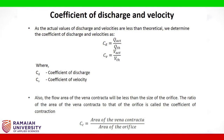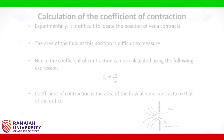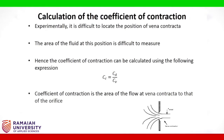The coefficient of contraction CC is equal to the area of the vena contracta divided by the area of the orifice. Experimentally, it is difficult to locate the position of vena contracta, so the coefficient of contraction can be calculated using the expression CC = CD / CV.